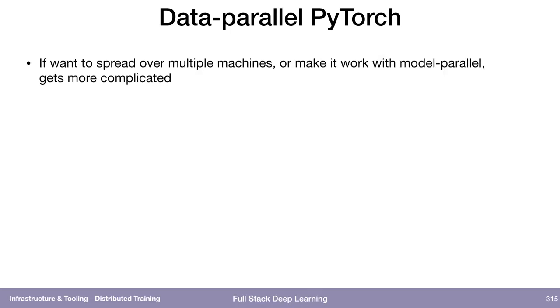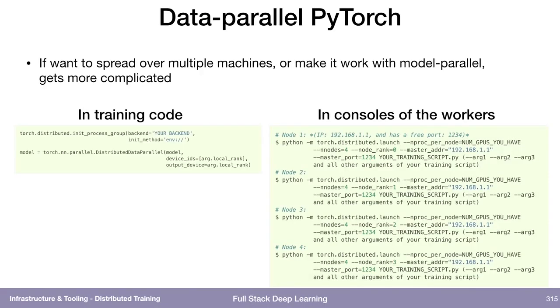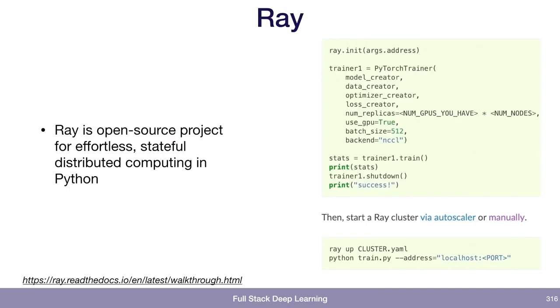If you want to spread training over multiple machines and not just multiple GPUs on a single machine, or if you want to make it work with model parallel, there's PyTorch Distributed Data Parallel. That gets a lot more complicated because you need a model parameter server, and over multiple machines you have to log into each one and start the distributed process — they all talk to the same server. I want to call out a project called Ray, which got started at Berkeley. Ray is an open source project whose goal is to make stateful distributed computing very easy in Python. For deep learning, they make distributed training on multiple machines easier than with native strategies, so Ray is definitely worth a look.